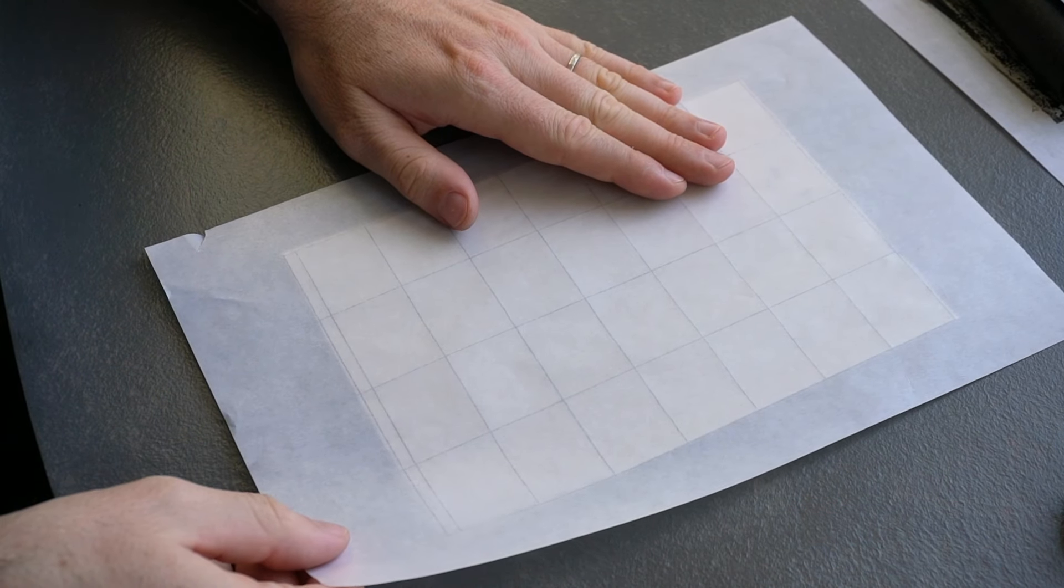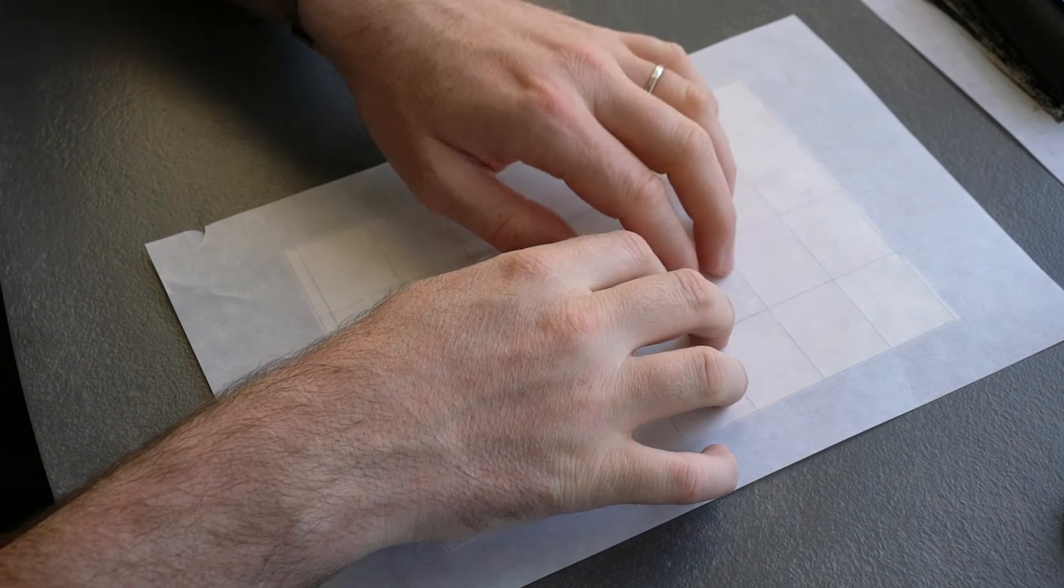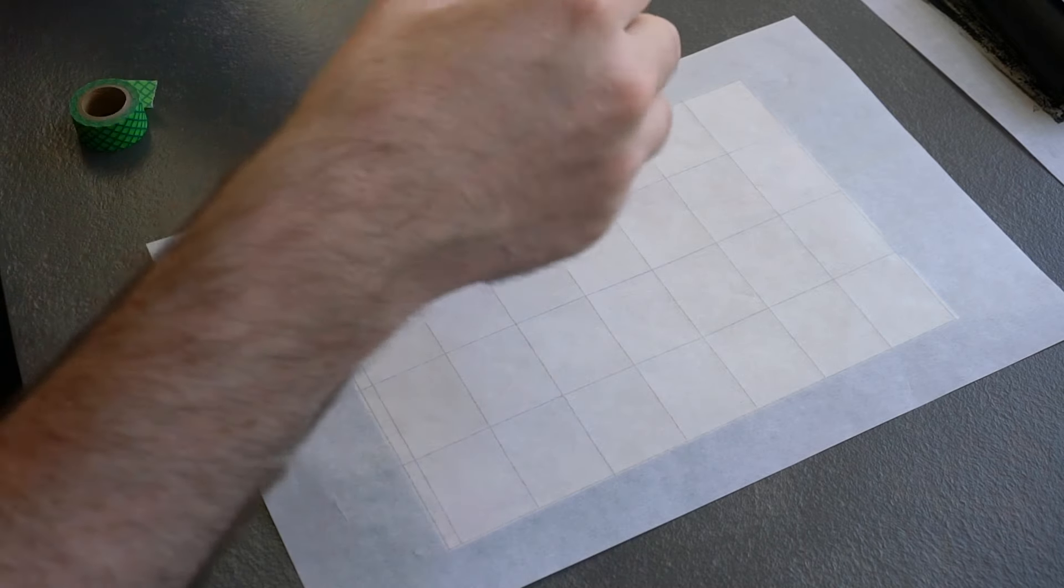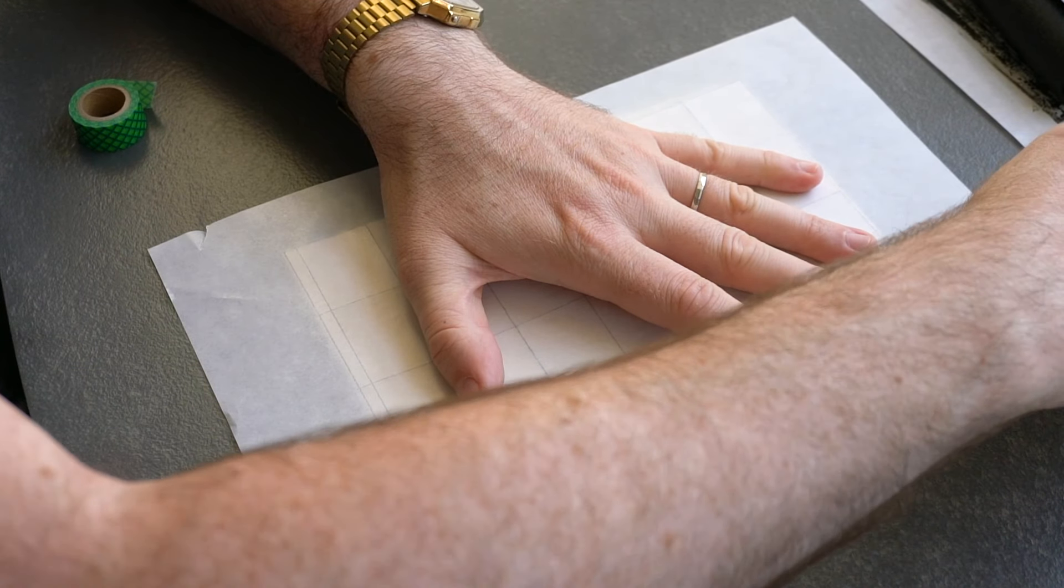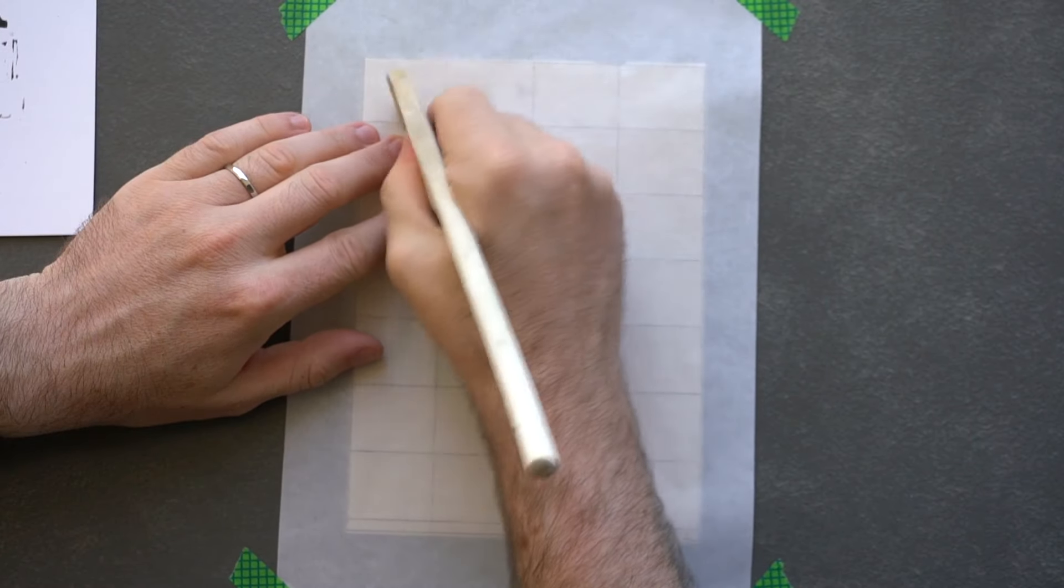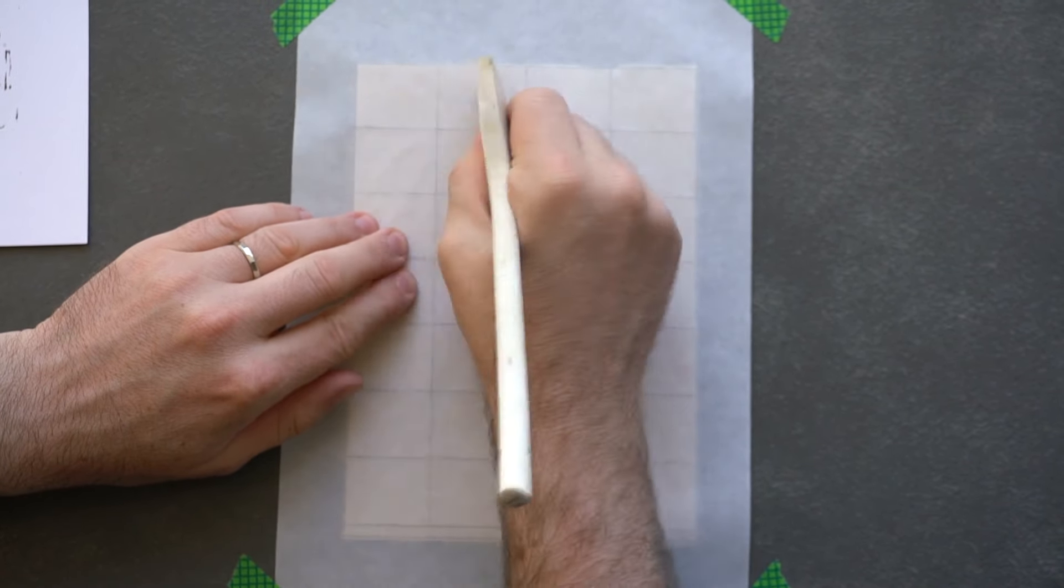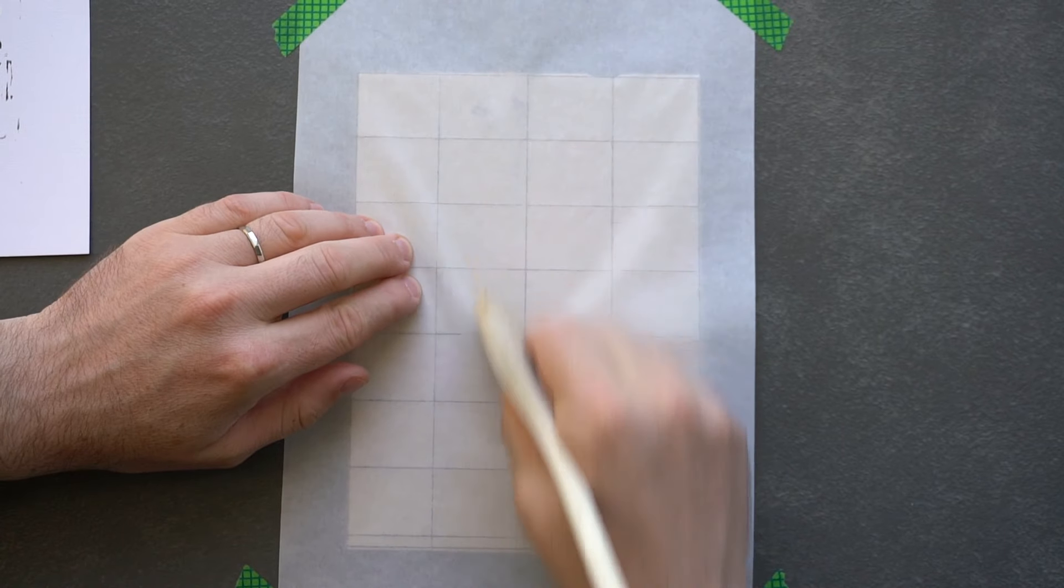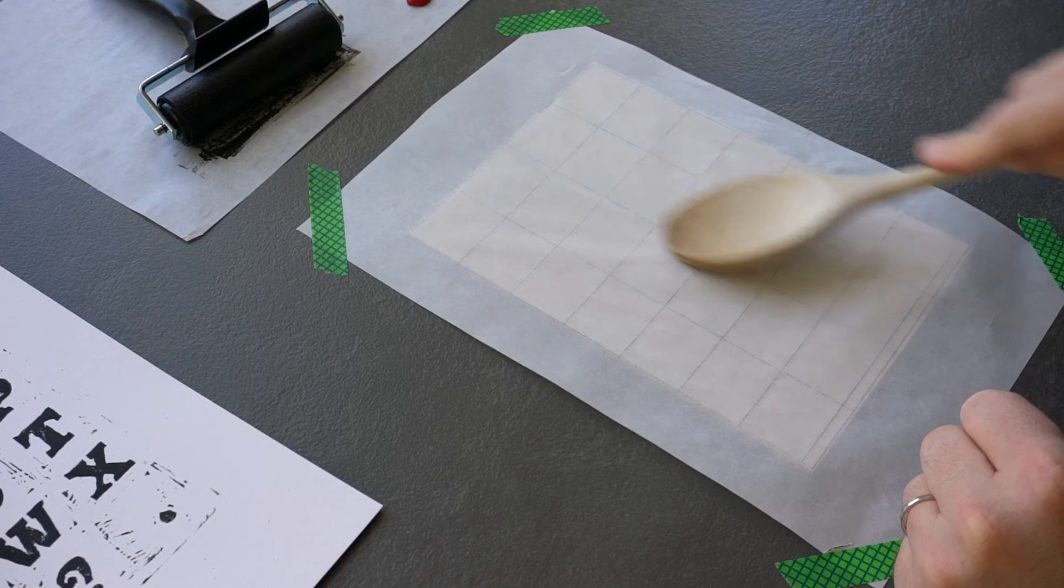You're going to flip that over, it goes on a nice flat back and you're going to line this up with the edges. And we put a bit of washi tape down which will help secure it to make sure it's not jiggling around while you're rubbing it on. And you're going to use a spoon again or whatever it is you choose to use. You can do it with your finger, you can do it with a pencil, you can do it with anything really that applies the right amount of even pressure.